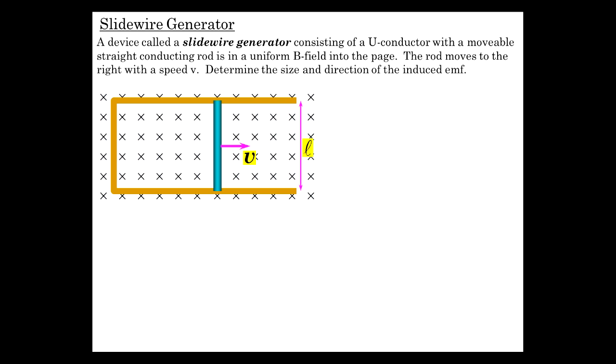There are a couple ways to think about this. If you move this to the right, you increase the area, thereby increasing the magnetic flux. If you increase the magnetic flux in a given amount of time, Faraday says you induce an EMF. But another way to think about it is that you've got this conductor with free charges in it. You're moving those free charges to the right, and each one of those charges will experience a QVB force.